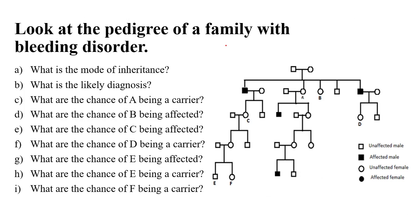Here is another question: look at the pedigree of a family with a bleeding disorder. What is the mode of inheritance? What is the likely diagnosis? And what is the chance of individuals A, B, C, D, E, and F being carriers or affected? To calculate the chance of A being a carrier — A is a female — we start from the nearest affected man. This man must have genotype Y and XD. The XD was inherited from his mother, so this mother must have XD and Xn. Therefore the chance of A being a carrier is 100%.